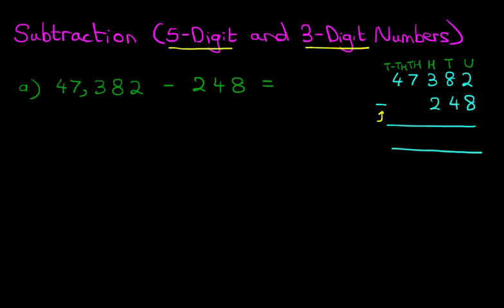We are now ready to go ahead and do the subtraction. As always, we start on the right hand side first. Now let's show some workings over here. For units we've got two minus eight. Now two minus eight we cannot do because two is smaller than eight. So what we're going to do is take one from the tens on the left. Let's cross out eight — eight minus one is seven — and the one we have taken we're going to add to the units.